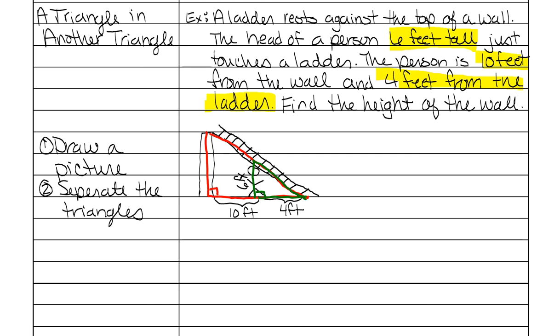And this is what that would look like. We're trying to find how tall the wall is. So this will be x. And then the bottom of this, if this piece is ten and this piece is four, then the bottom will be fourteen. Now draw your littler triangle.